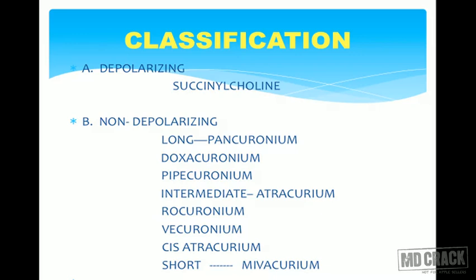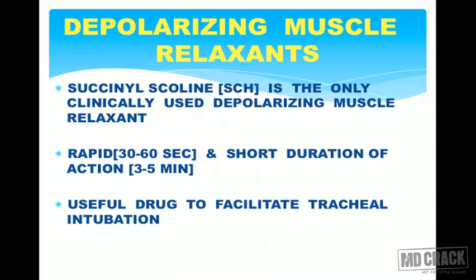Intermediate-acting non-depolarizing muscle relaxants include atracurium, cis-atracurium, vecuronium, and rocuronium. The short-acting or ultra-short-acting agent is mivacurium.